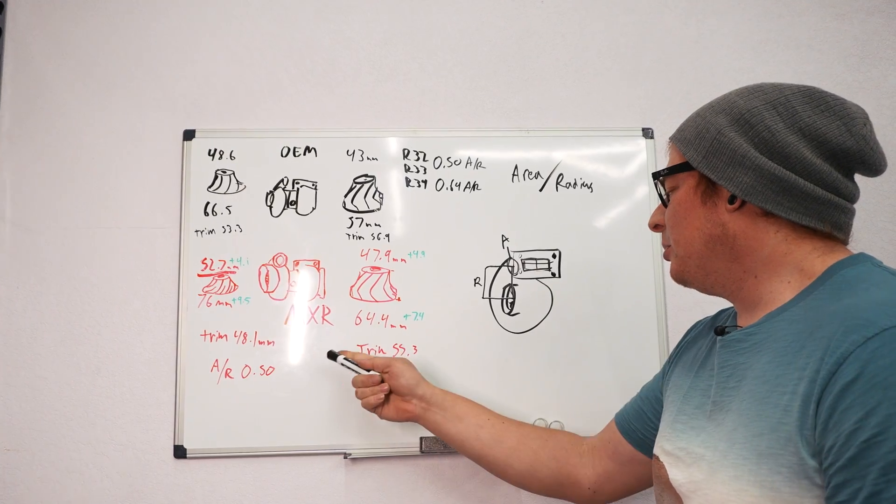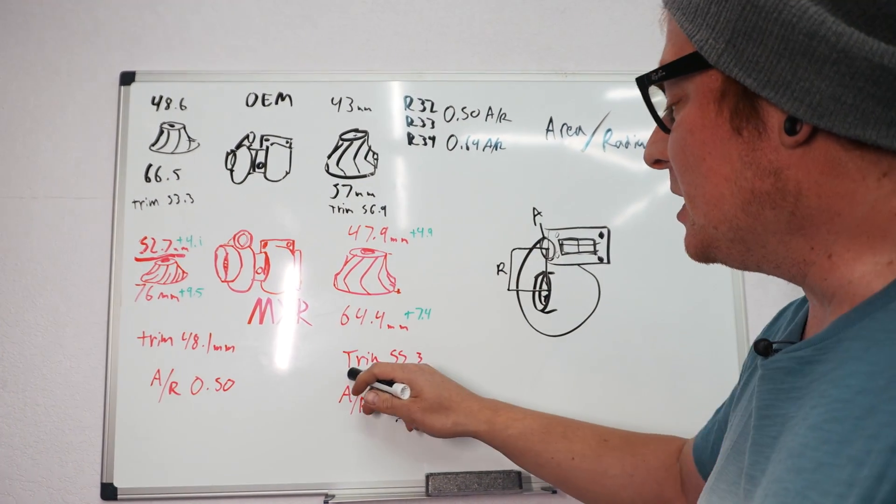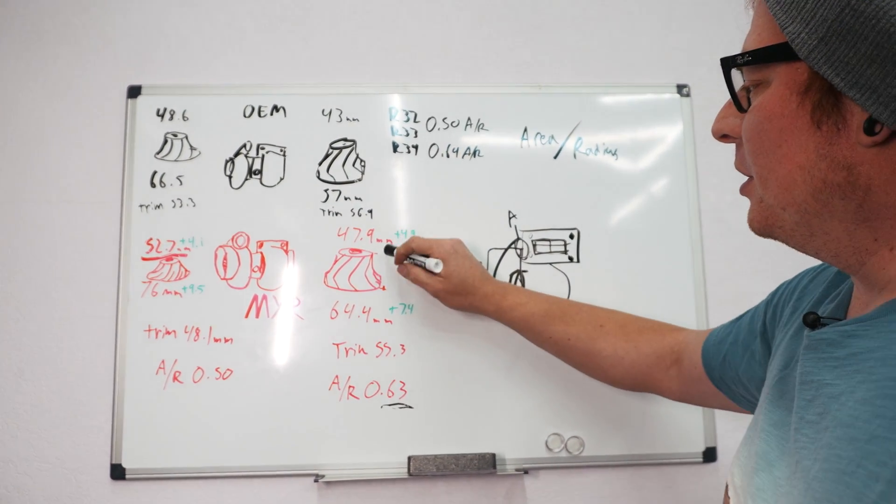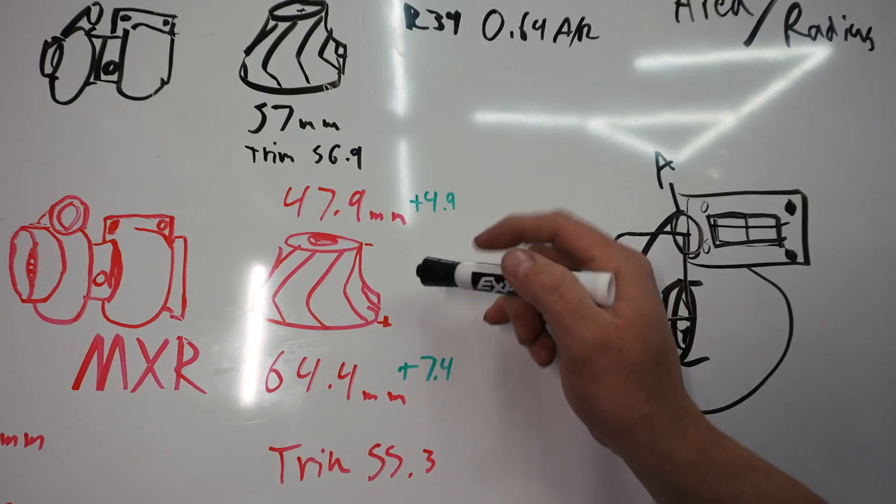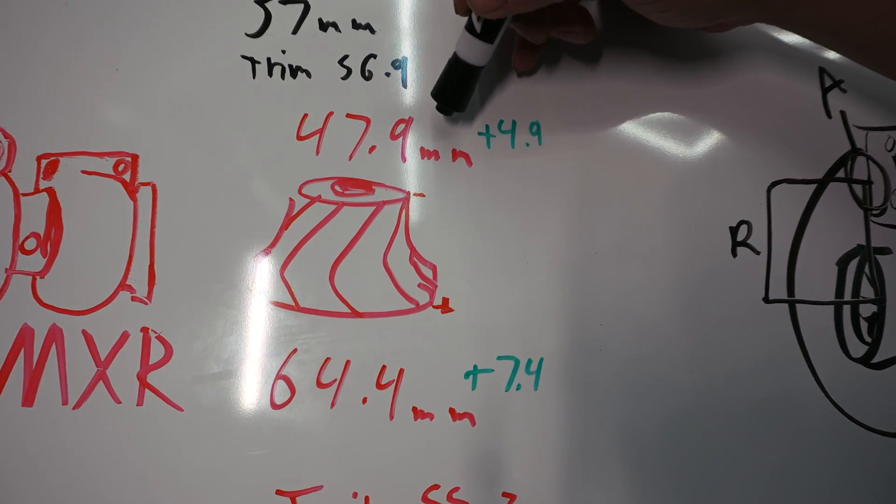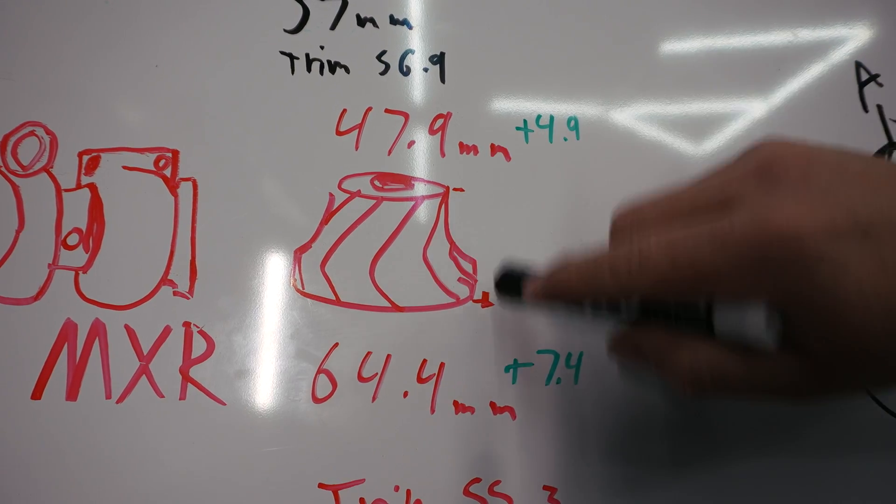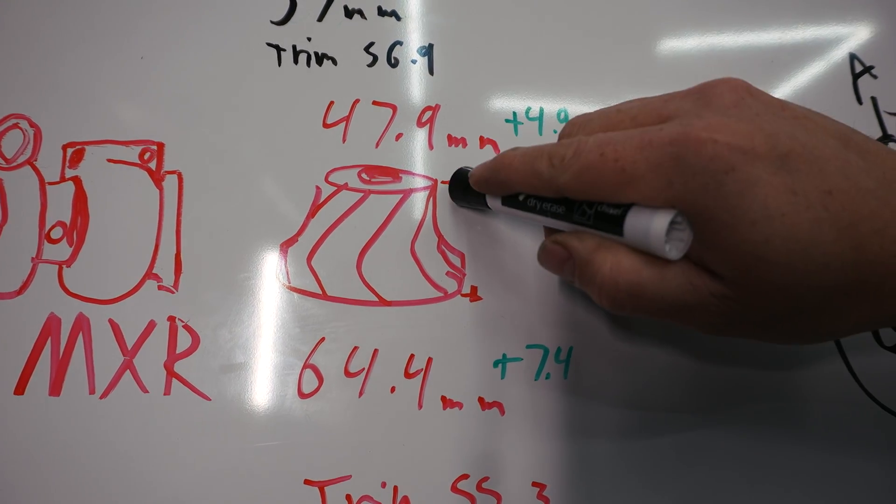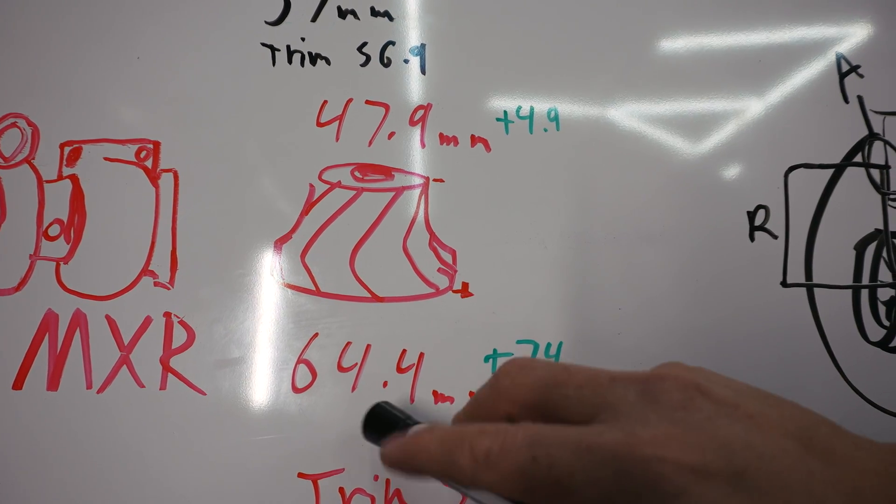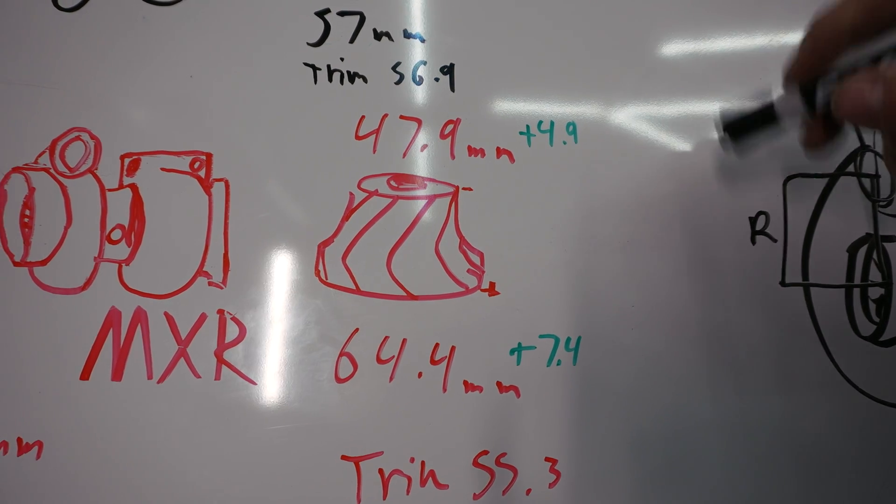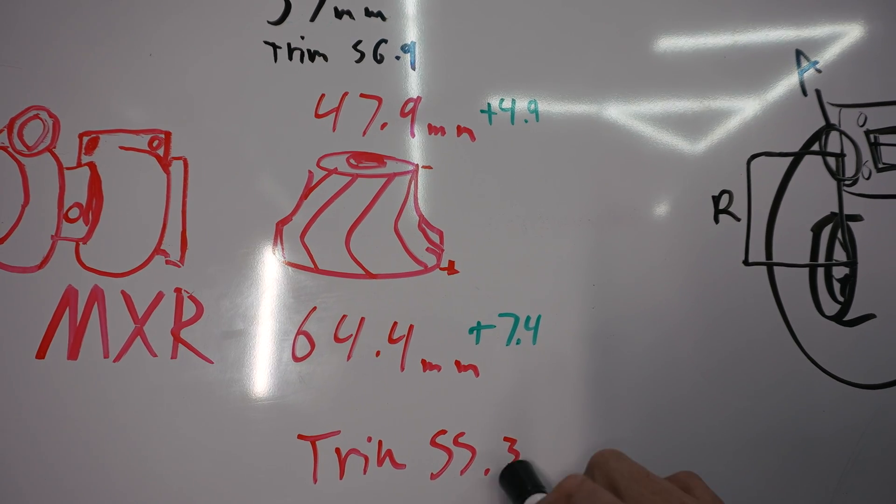The next term that is listed on Max Speeding Rods website and a lot of other turbo manufacturers is the trim. The trim is a ratio between the small diameter and the large diameter of the turbine or compressor wheels. You get this number by taking, I want to say inducer, but on the turbine this is the exducer and this is the inducer. If you do the math that way I can't get it to work out, so I think it's just a small diameter versus the big diameter. You take the small one, square it, and then divide it by the large diameter and square that, and then you times it by 100. That gives you the trim.